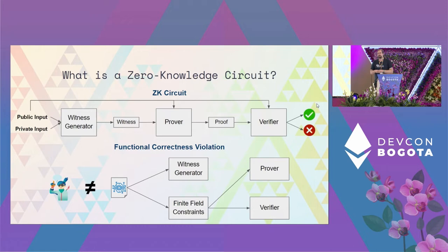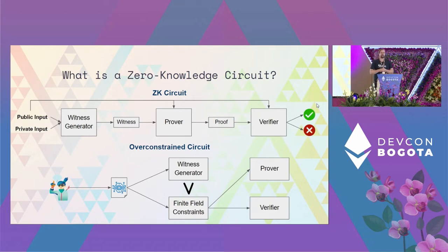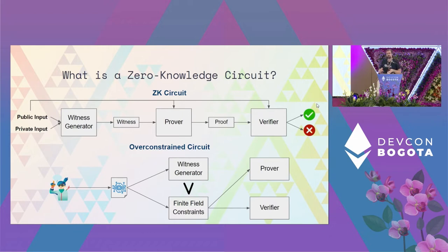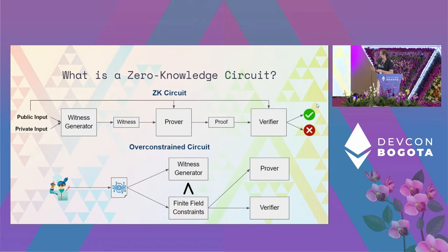One type of bug we see is if someone doesn't implement their circuit correctly — that's a functional correctness violation, and it basically means someone needs to rewrite their circuit. The more interesting bugs are when the witness and the constraints are not in sync with each other. If the constraints are less permissive than the witness generator, you could reject valid interactions with the application. For example, if you have a blockchain, you could have a denial of service where the blockchain wouldn't be able to process transactions. The more dangerous case is an under-constrained circuit.